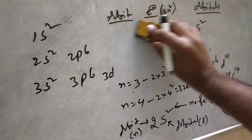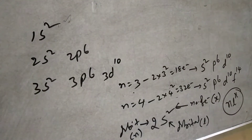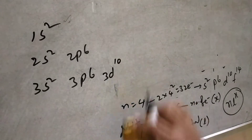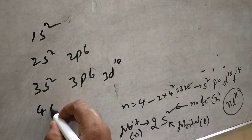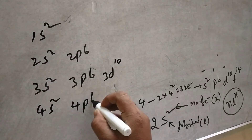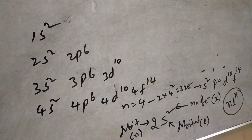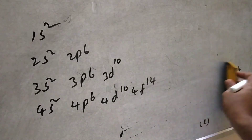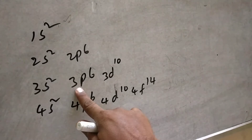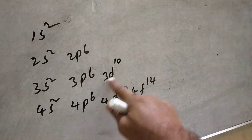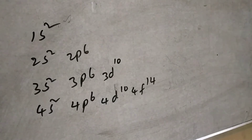You have to represent properly. For the 4th orbit containing S, P, D, F: write 4S2, 4P6, 4D10, 4F14. So for 3rd orbit: 3S, 3P, 3D. And 4th orbit: 4S, 4P, 4D, 4F.